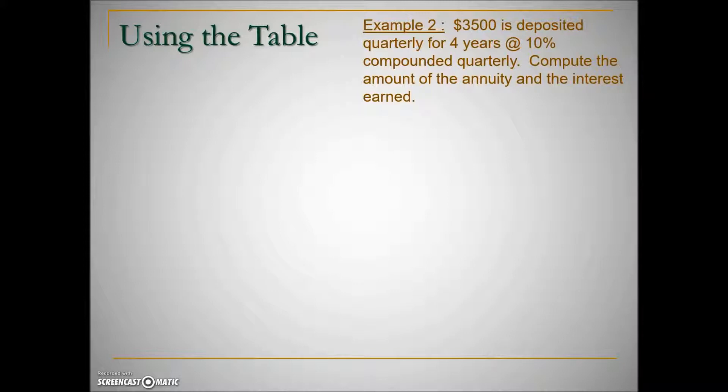In this next example, we have $3,500 being deposited quarterly for four years at 10% compounded quarterly. Compute the amount of the annuity, in other words the future value that it will grow to, and the interest earned after the four years.